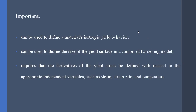Some important notes. The VU hard subroutine can be used to define a material's isotropic yield behavior as well as a combined hardening model. Also, it requires that the derivatives of the yield stress be defined. This might sound scary but we are going to see that we can easily define the derivatives of the yield stress with respect to temperature or strain rates.